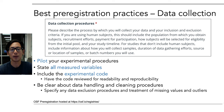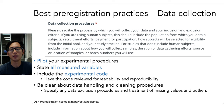An important component is listing your data collection procedures. I highly recommend piloting all experimental procedures beforehand to ensure your protocol provides the data you expect. You should state all measured variables and include any experimental code you use — this is a good nudge that your code needs to be reviewed for readability and reproducibility, sharing that responsibility among collaborators. It's also important to be clear about data handling and cleaning procedures: specify any data exclusion procedures and treatment of missing values and outliers in a principled way, rather than post-hoc, which may be mistaken for p-hacking.